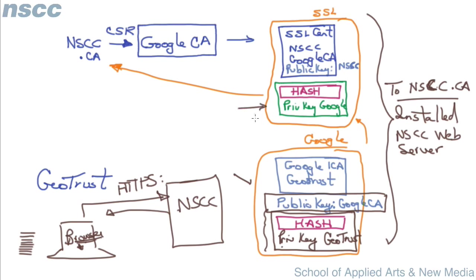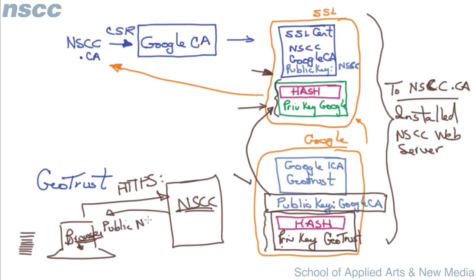Now it looks at the SSL certificate that comes back from NSCC. It uses Google's public key to decrypt the hash and checks that the certificate was not altered. It says: Google has signed this SSL certificate. Since I trust GeoTrust, and since GeoTrust trusts Google, and Google trusts this certificate, therefore the browser accepts the certificate from NSCC. It then extracts the public key from NSCC.